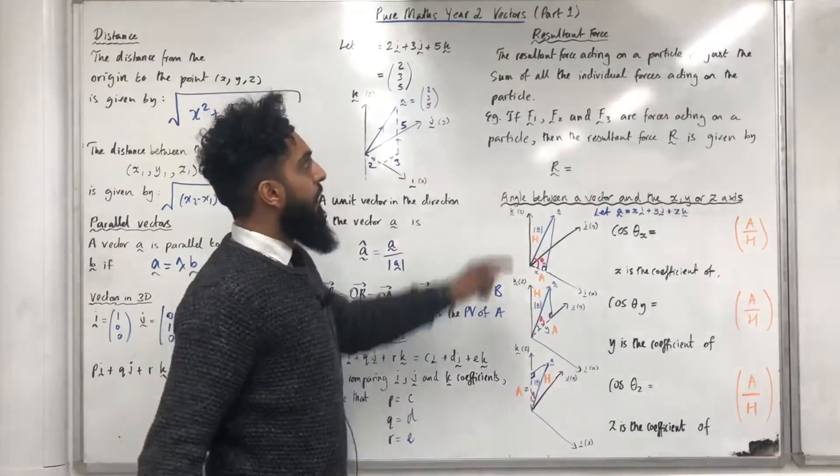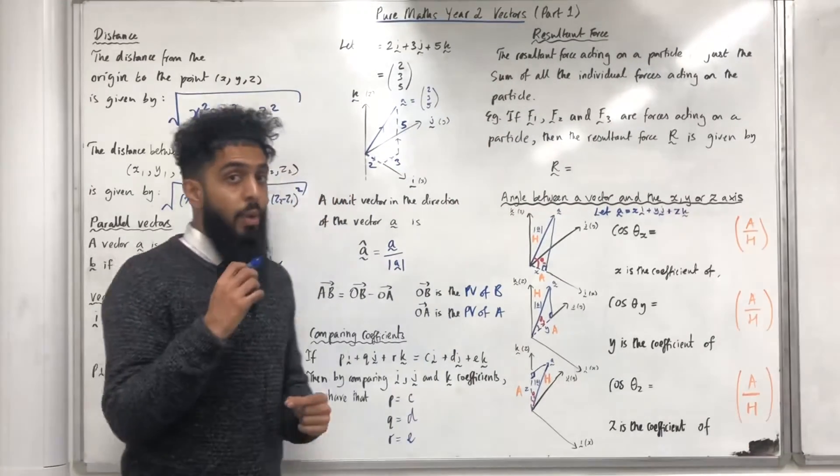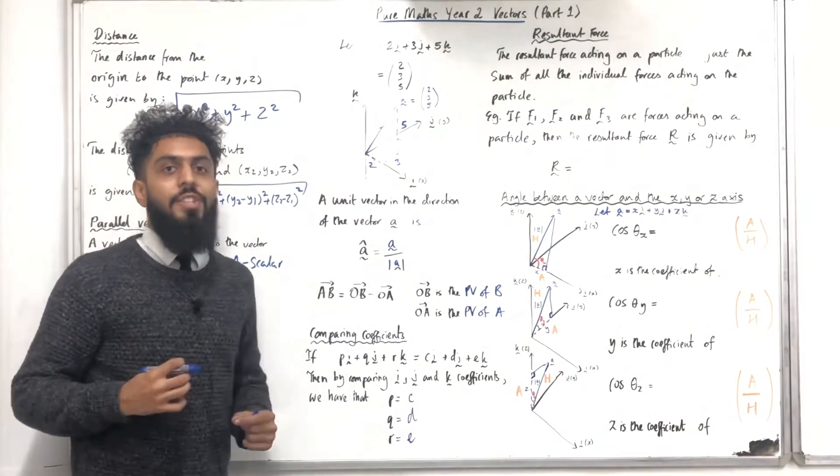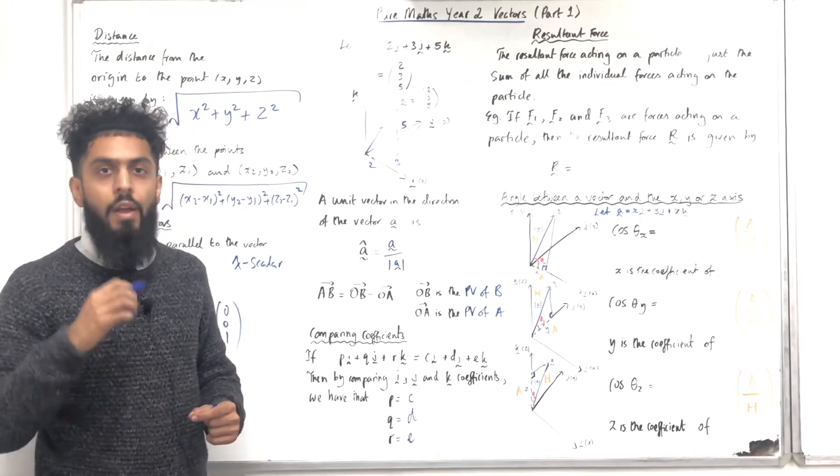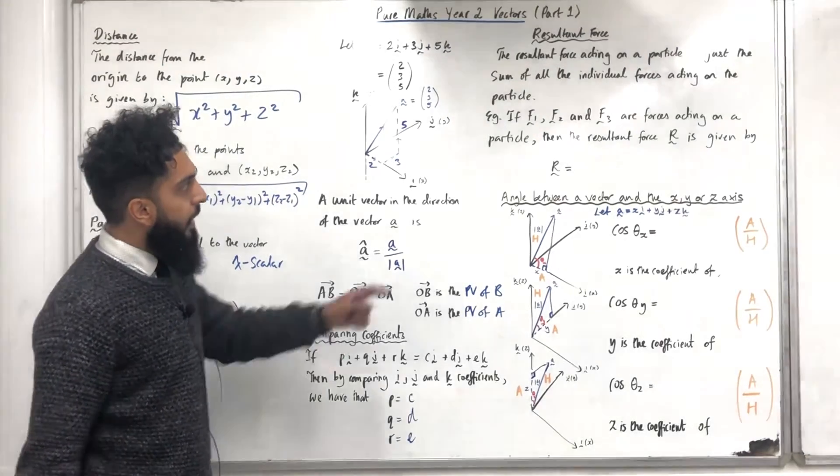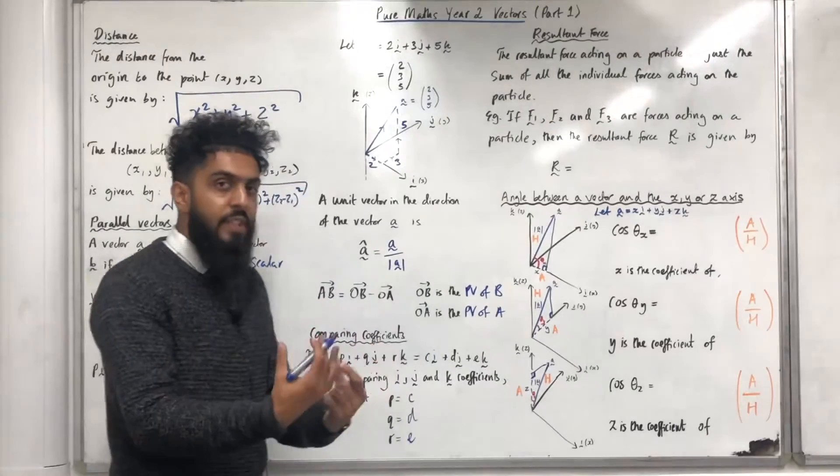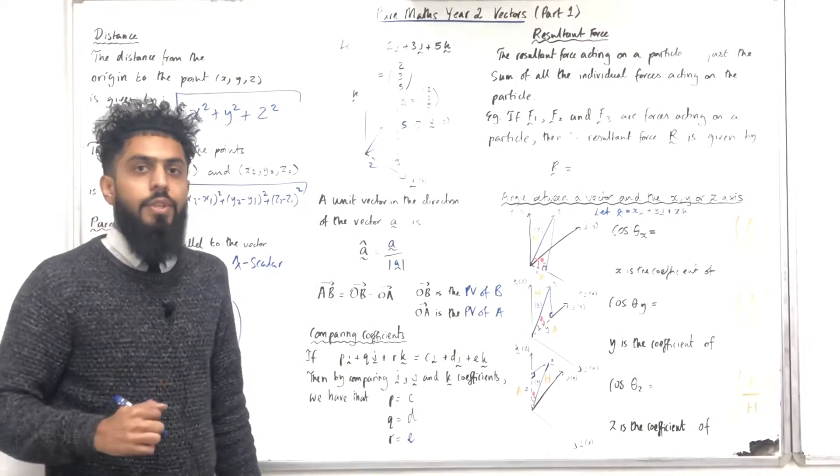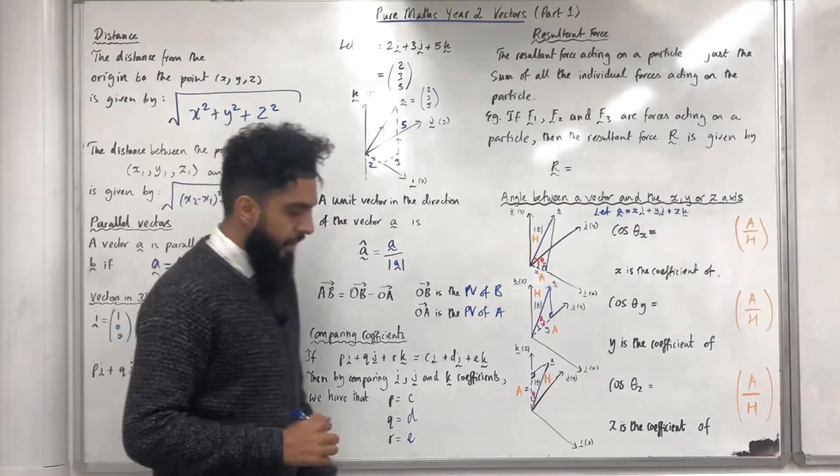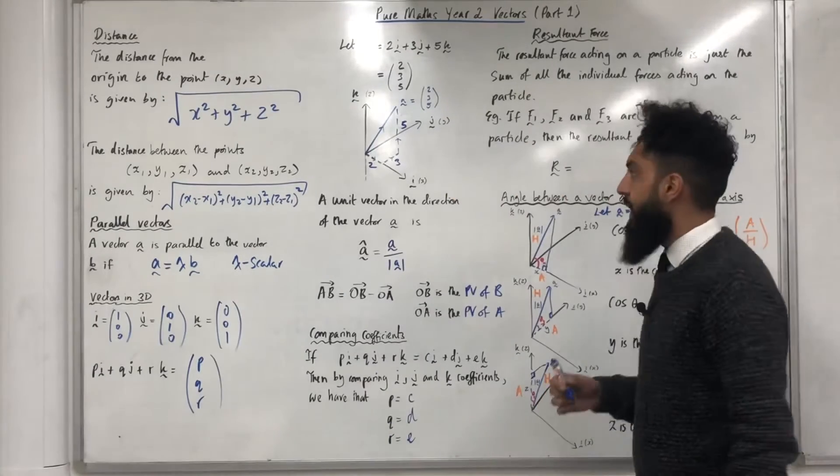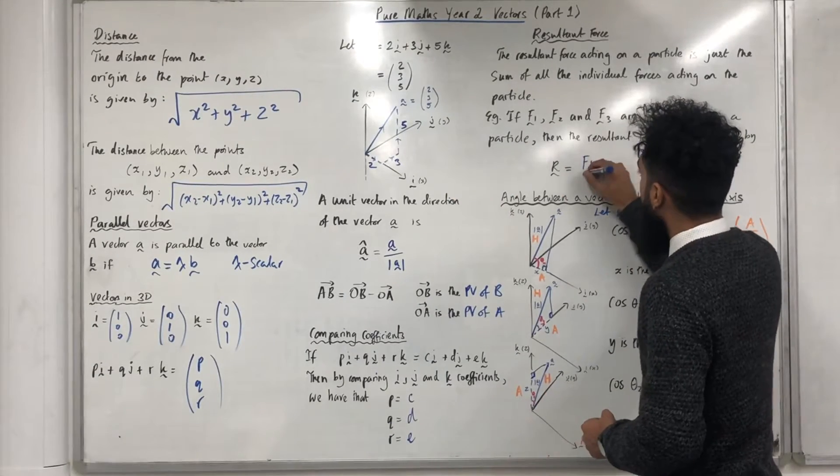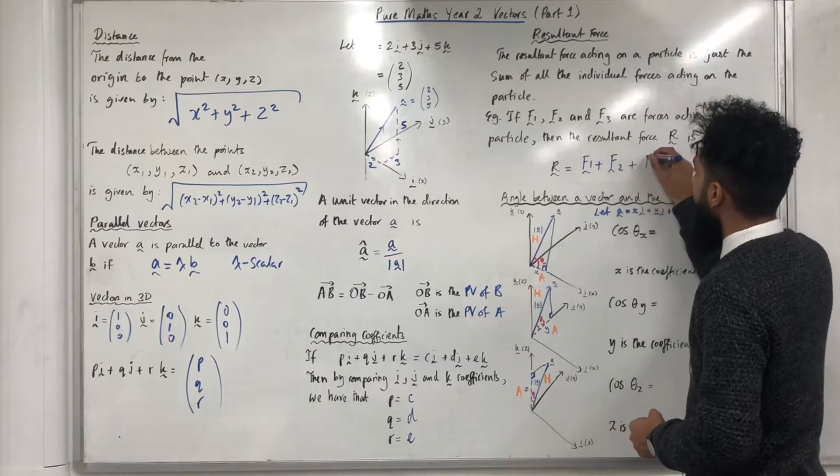Moving on to resultant force. The resultant force acting on a particle is just the sum of the individual forces acting on the particle. For example, if f1, f2 and f3 are forces acting on a particle, the resultant force r is given by the sum of these individual forces. So we have f1 plus f2 plus f3.